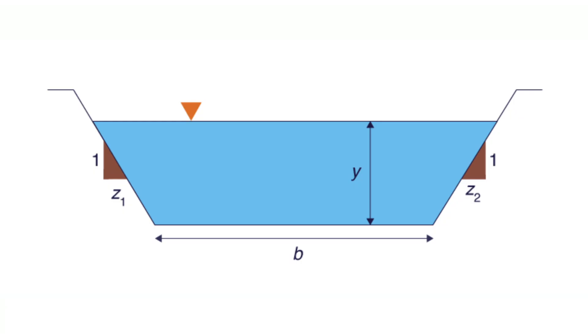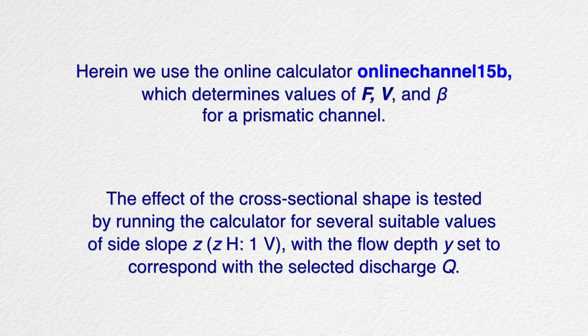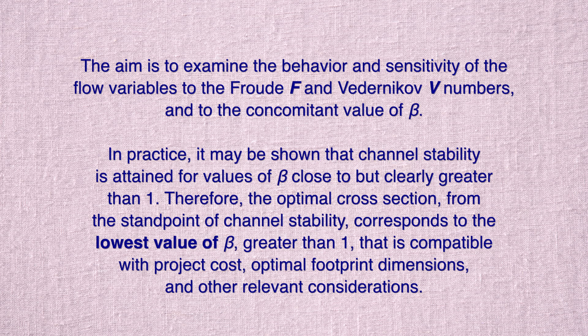We run the calculator for a series of cross-sectional shapes, including trapezoidal and rectangular, keeping constant the following variables: (1) discharge Q, (2) Manning's n, and (3) bottom slope S. The effect of the cross-sectional shape is tested by running the calculator for several suitable values of side slope z, with the flow depth y set to correspond with the selected discharge Q. The aim is to examine the behavior and sensitivity of the flow variables to the Froude and Bedernikov numbers, and to the concomitant value of beta. In practice, it may be shown that channel stability is attained for values of beta close to but clearly greater than 1. Therefore, the optimal cross-section from the standpoint of channel stability corresponds to the lowest value of beta greater than 1 that is compatible with project cost, optimal footprint dimensions, and other relevant considerations.